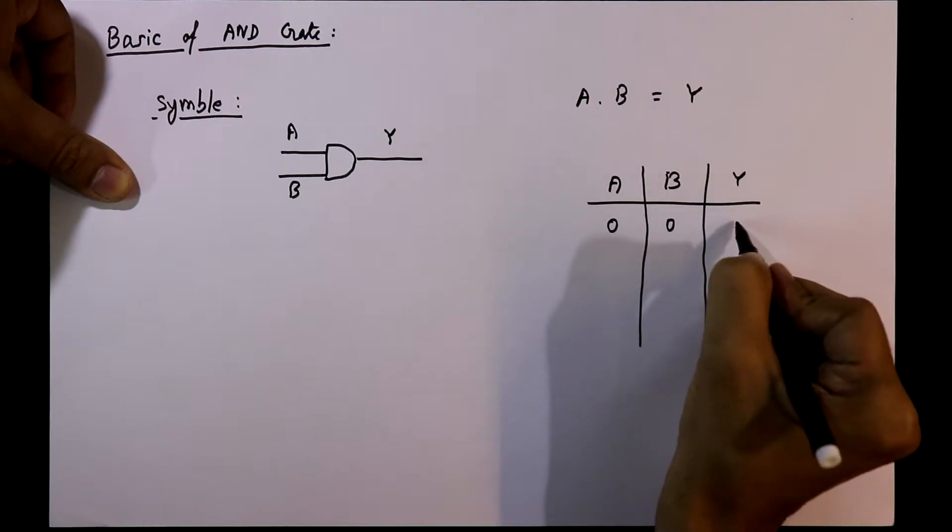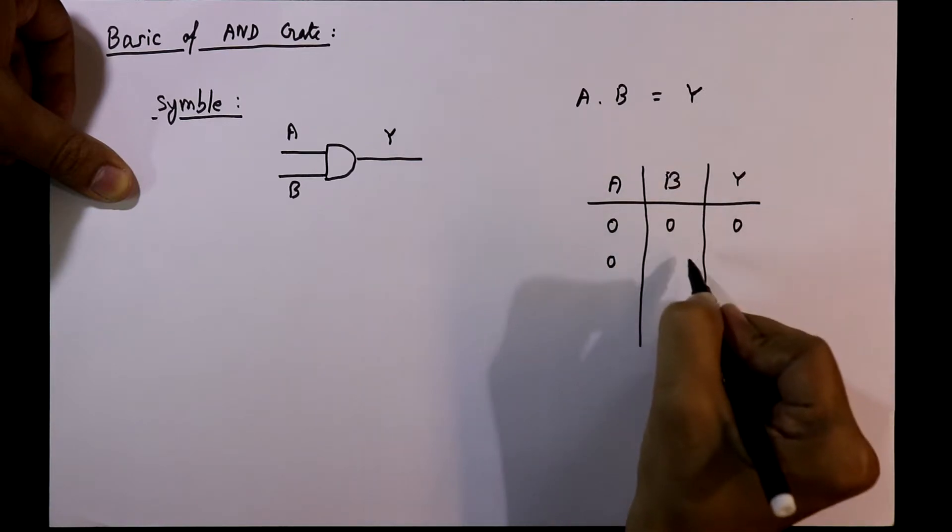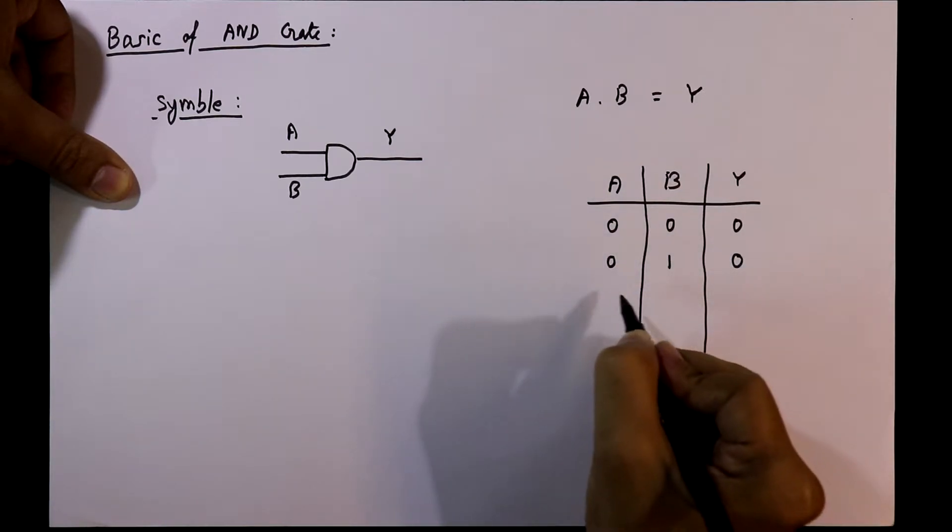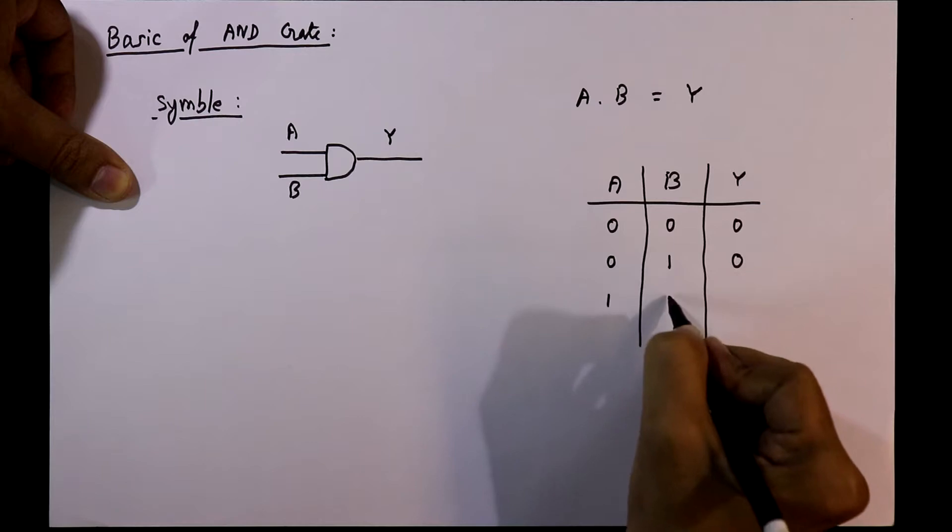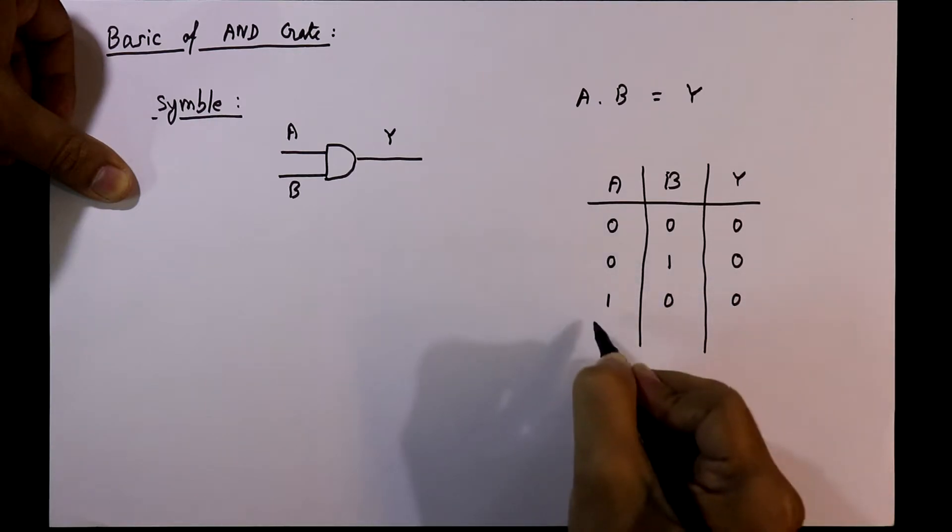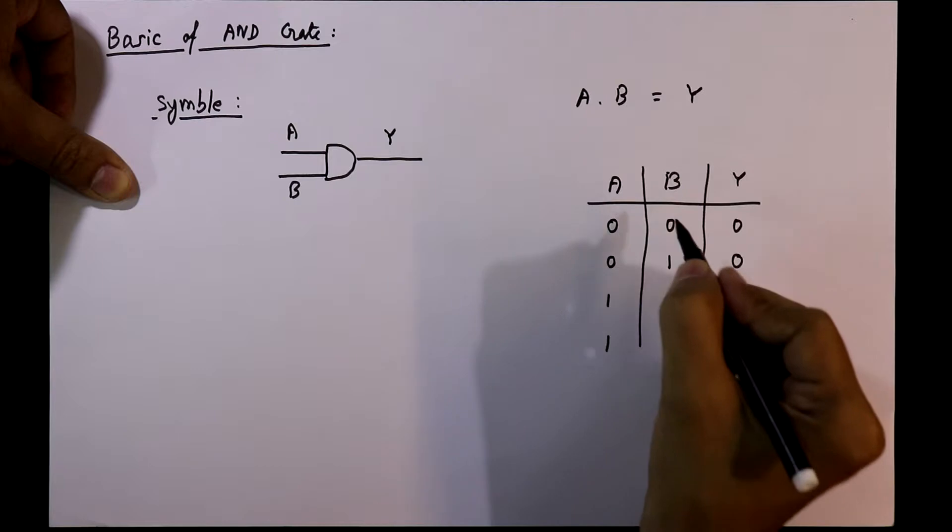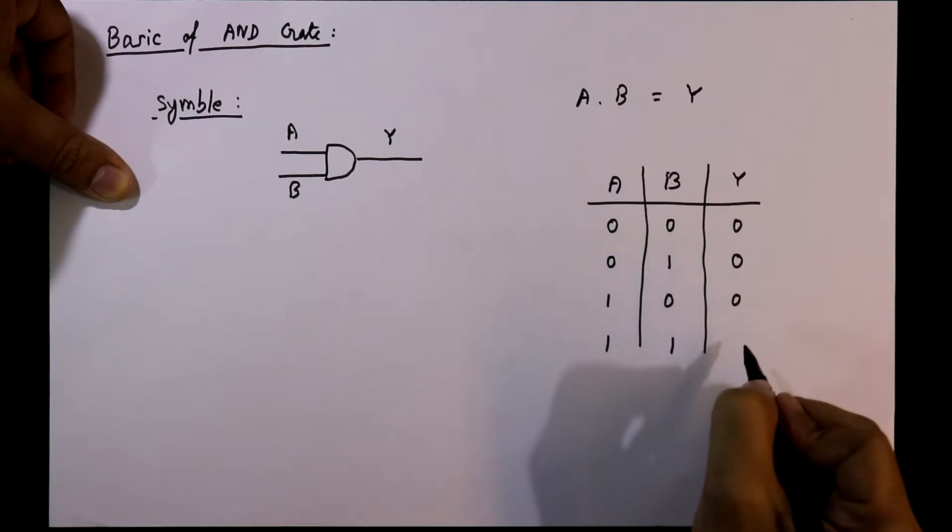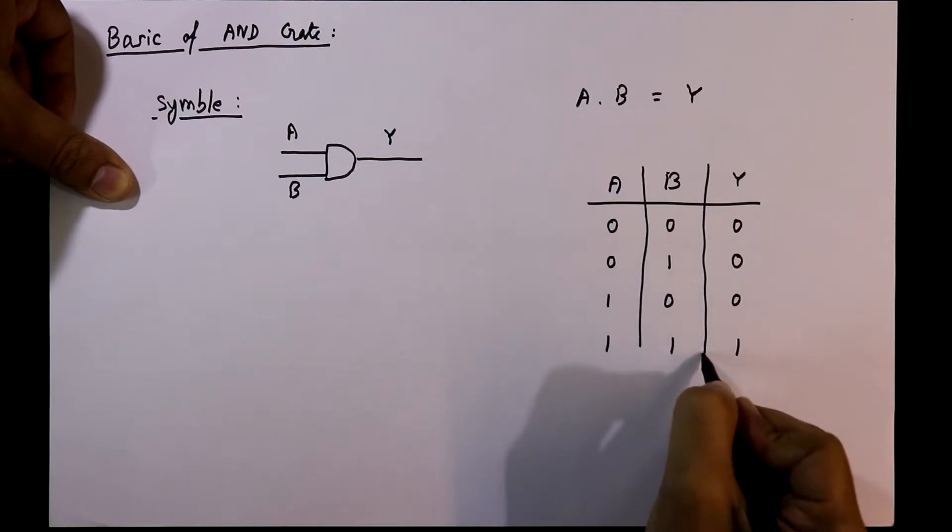When A is 0, B is 1, output will be 0. When A is 1, B is 0, output will be 0. And if both inputs are 1, then only the output will be 1.